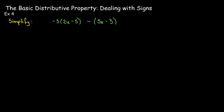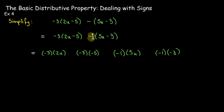What is different about this next example? We still have two sets of parentheses, but now I just have a minus sign in front of the second set. We're going to treat that as multiplication by negative 1. So I still think of this as negative 3 times 2u, then negative 3 times negative 5. In the second set of parentheses, I have negative 1 times positive 5u and negative 1 times negative 3. Multiplying those out, I have negative 6u and negative 5u, which make negative 11u, and 15 plus 3 make 18.